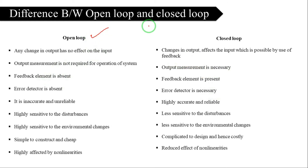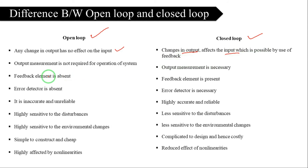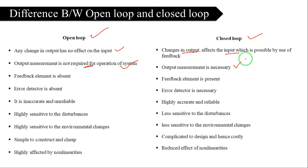Now let's discuss the differences between open-loop and closed-loop control systems. First point: in an open-loop system, any change in output has no effect on the input. In a closed-loop system, any change in output affects the input via the feedback connection. Second point: in open-loop, output measurement is not required because there is no connection from output to input. In closed-loop, output measurement is necessary.